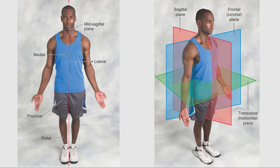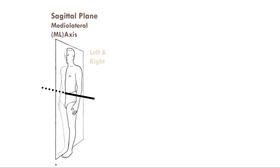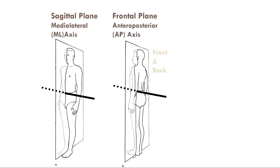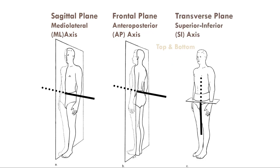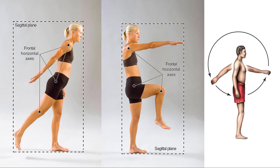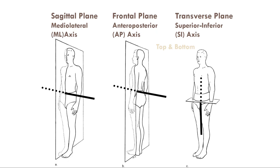We use planes not only to categorize and organize movements, but also to help analyze which muscles and tissues are involved. The sagittal plane divides the body into left and right halves, with a medial-lateral axis perpendicular to it — like a pin going through the paper — representing the axis of rotation. The frontal plane has the anterior-posterior axis and divides the body into front and back halves. The transverse plane has a vertical, superior-inferior axis.